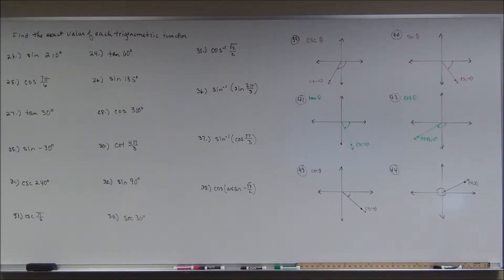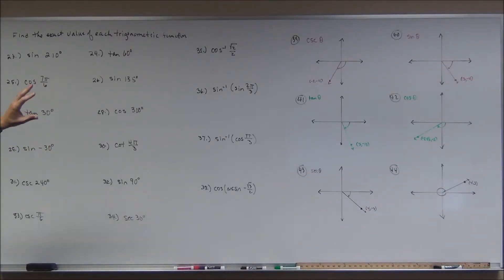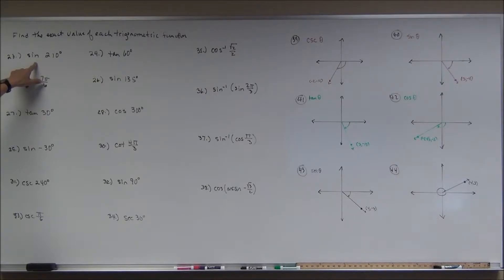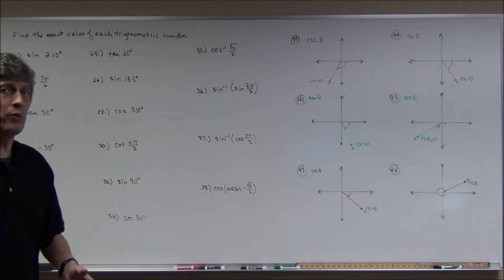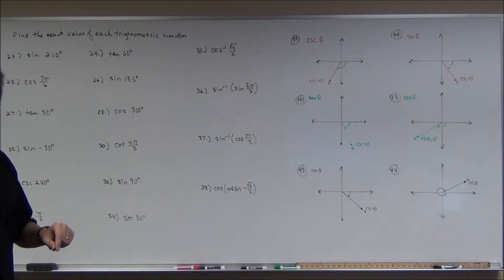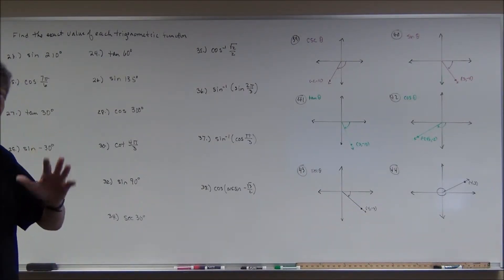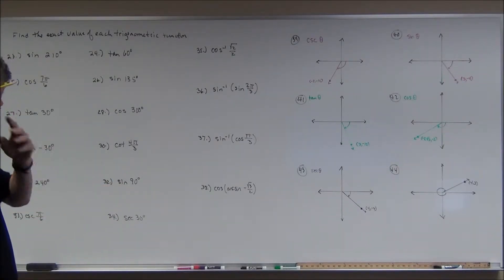Welcome to video number three for your trig test review. There are twelve problems here. If you don't know your unit circle, you need to know your reciprocal relationships, your quotient relationships, and your unit circle, because you can't go anywhere without it. For example, the sine of 210 degrees — you're going to need your unit circle. Practice it until you've got it down cold, unless he gives you a unit circle as a reference.